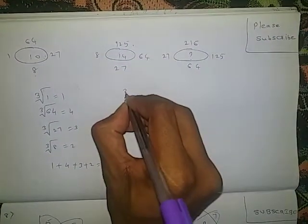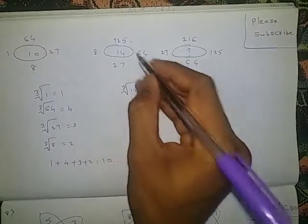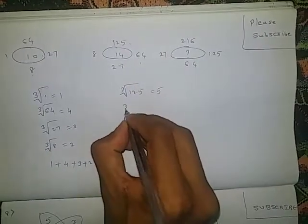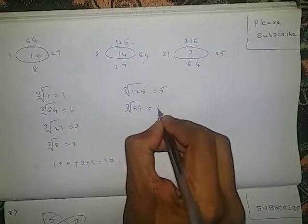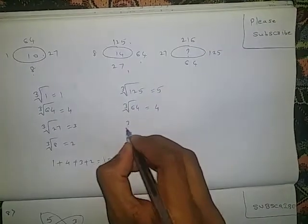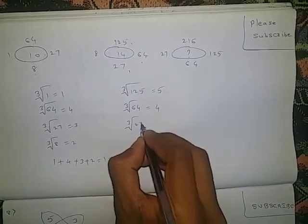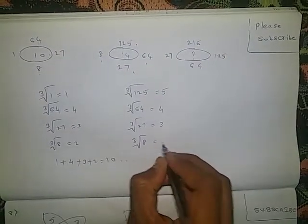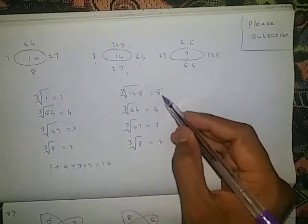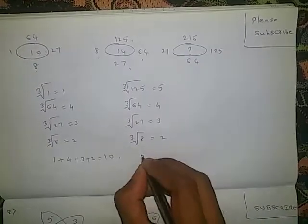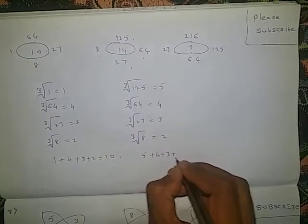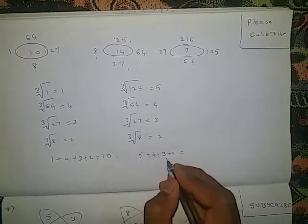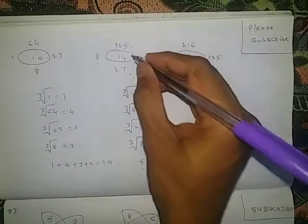Apply the same logic here. Cube root of 125 is 5. Cube root of 64 is 4. Cube root of 27 is 3. Cube root of 8 is 2. Add all: 5 plus 4 plus 3 plus 2 — 5 plus 4 is 9, plus 3 is 12, plus 2 is 14. So 14 is the middle number.